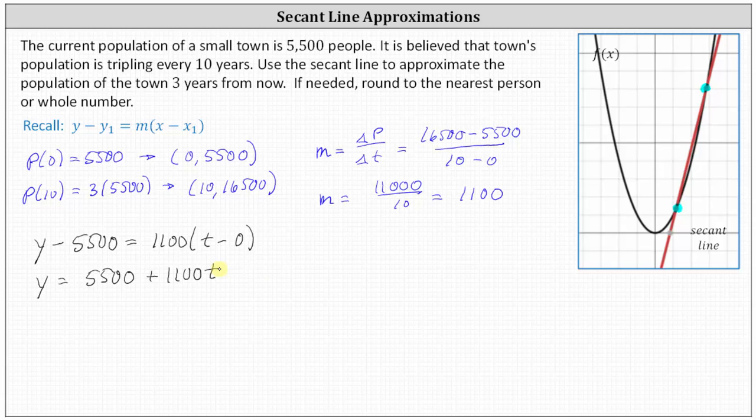And now we can approximate the population in three years by determining y of three. y of three is equal to 5,500 plus 1,100 times three, which is equal to 8,800 people.